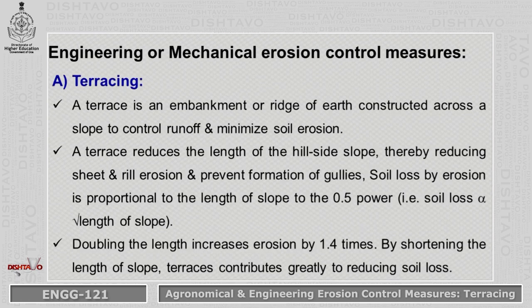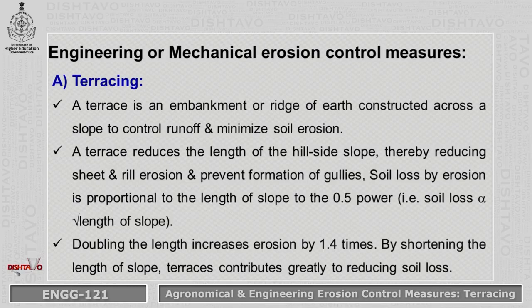The first Engineering Erosion Control Measure is terracing. A terrace is an embankment or ridge of earth constructed across a slope to control runoff and to minimize soil erosion. A terrace reduces the length of the hill slope, thereby reducing two types of erosion — sheet erosion and rill erosion — and also prevents formation of gullies.